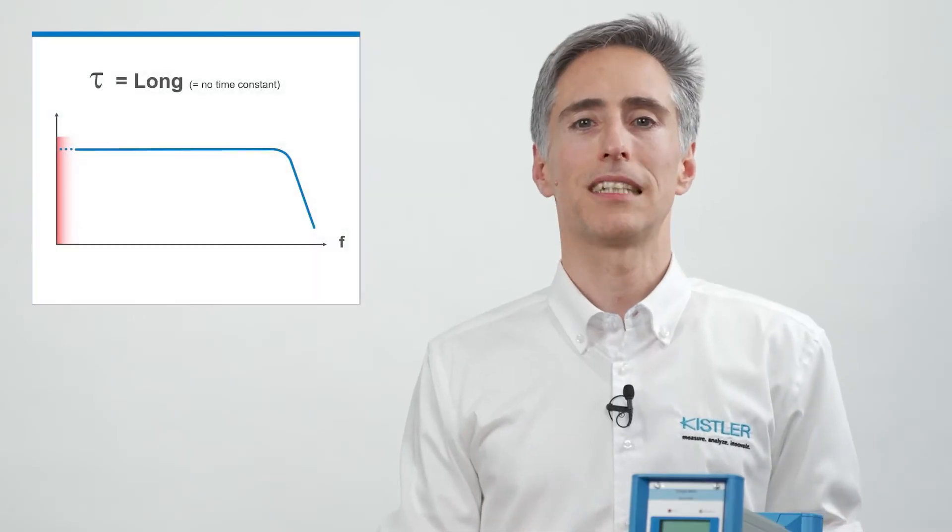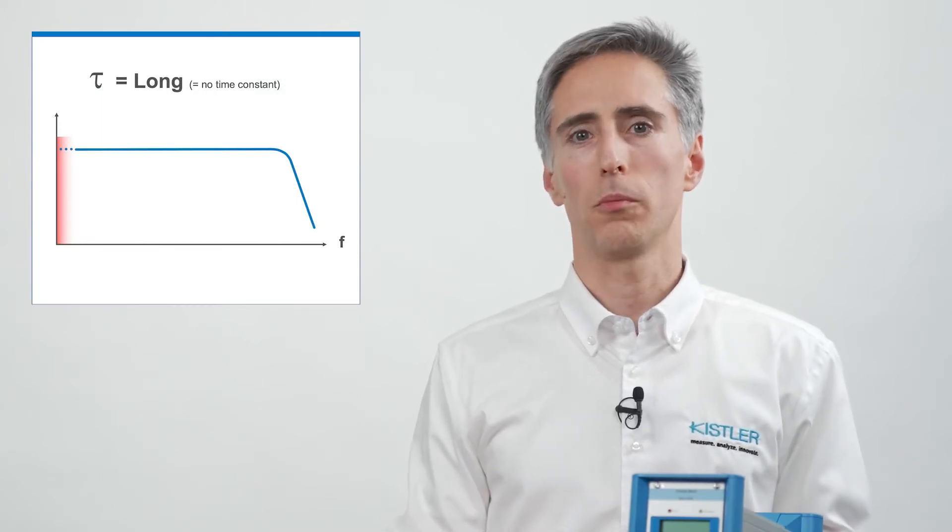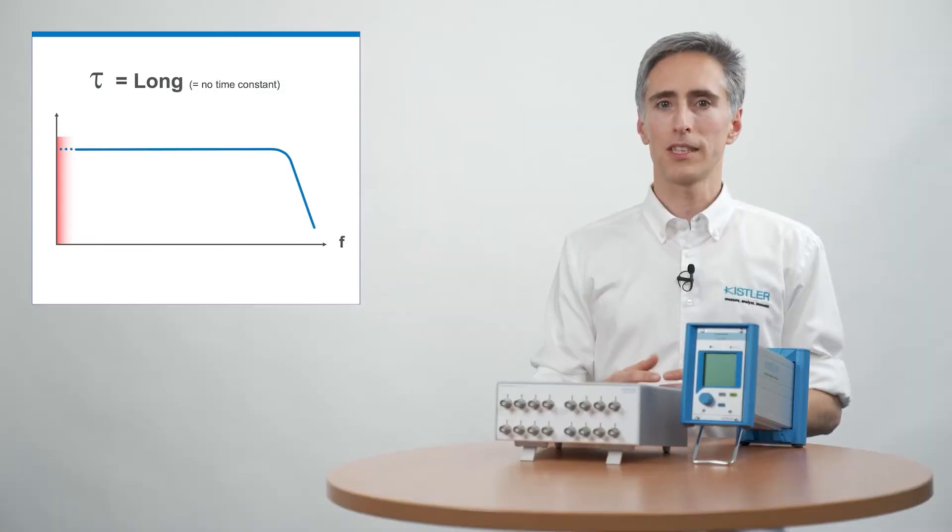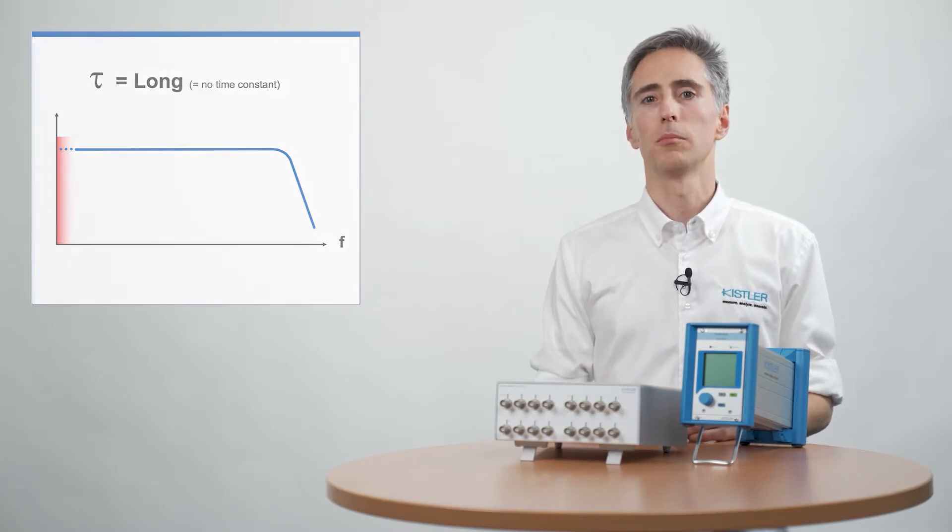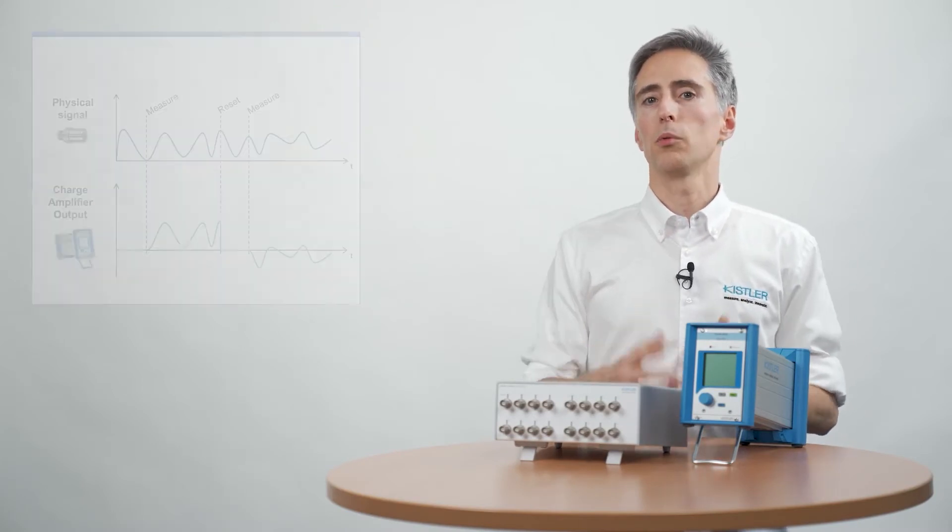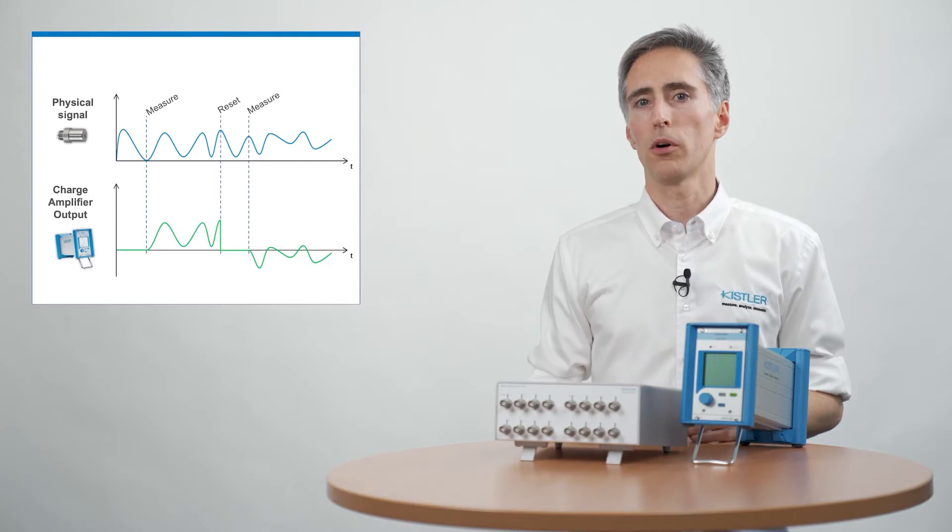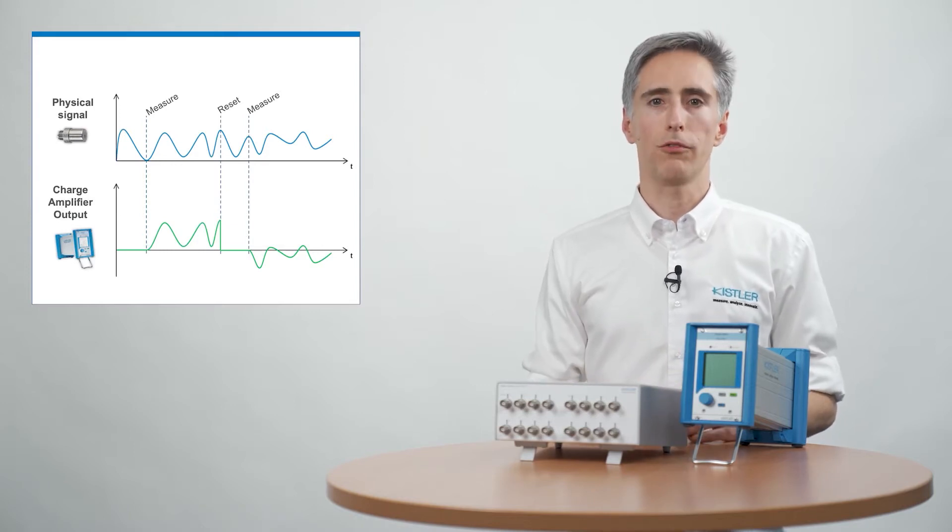When we measure very slow signals, we use a quasi-static design or measuring mode long. True static measurements are not possible, but when we open the reset switch, we set the zero point of the measurement and start measuring with this reference.